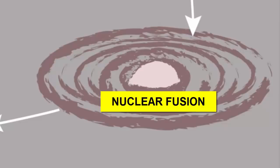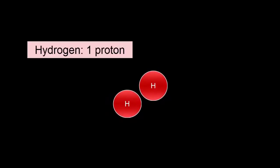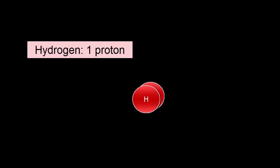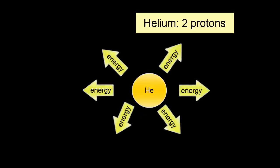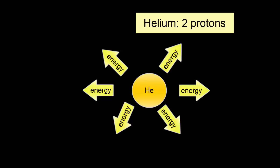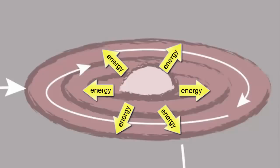Nuclear fusion is a process by which atomic nuclei fuse together to create new atoms. For example, when one hydrogen, one proton in the nucleus, fuses with another hydrogen, one proton in the nucleus, we get helium, two protons in the nucleus. During the fusion process, energy is released and shines outward from the center or core of this ball of gas.